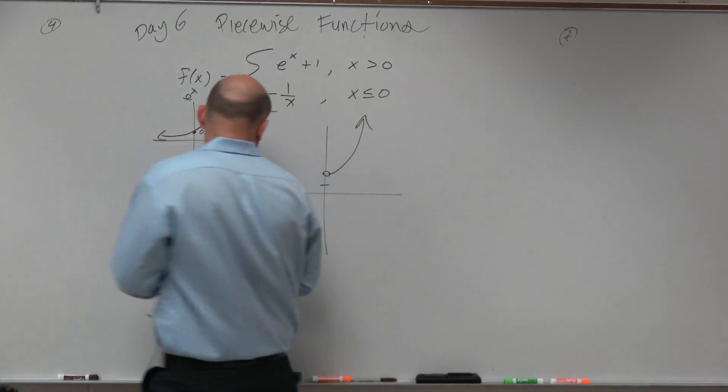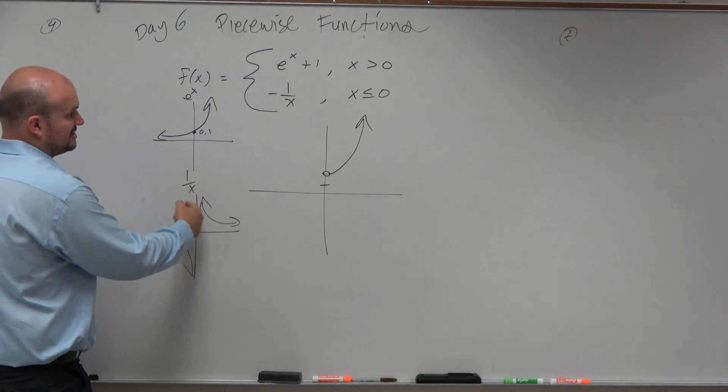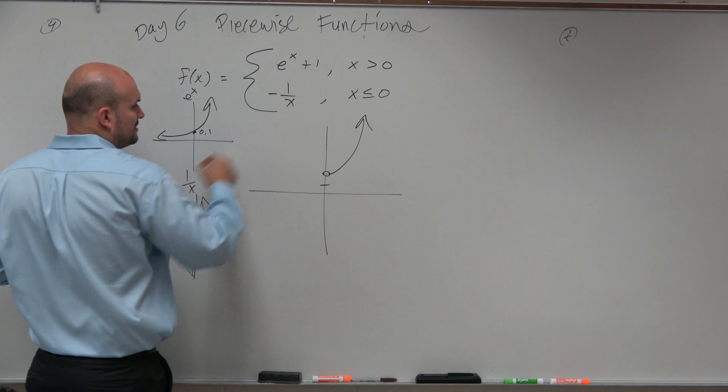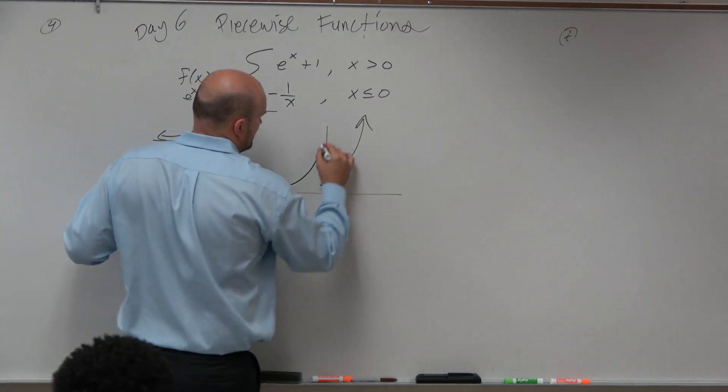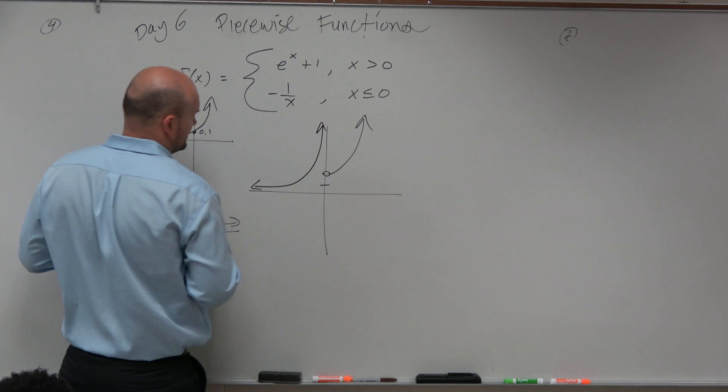So either way, the graph is going to look like this. But we're only for values that are less than or equal to 0. So the graph looks something like that.